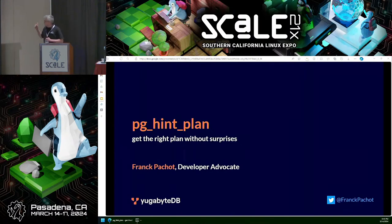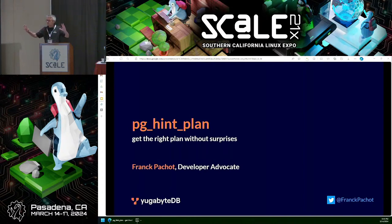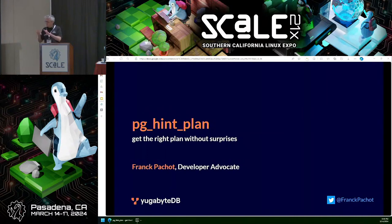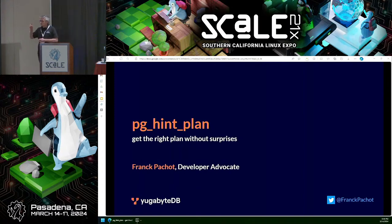I'm Franck Pachot, a developer advocate at YugabyteDB. YugabyteDB is a distributed Postgres. We use Postgres for the SQL layer, but on a distributed storage — a Spanner-like architecture for high availability and resilience. Because we use Postgres on the query layer, we can use Postgres extensions that are on the SQL layer, and we install PG-hint-plan by default.